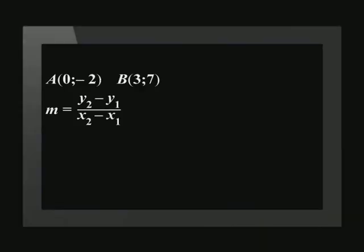Let's use these points and the gradient formula to find the average gradient. Gradient equals 7 minus negative 2 over 3 minus 0. This simplifies to 3. This means that the average gradient between x equals 0 and x equals 3 is 3.